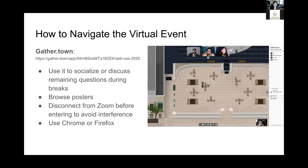The third platform — and this is supposed to be a fun one — is Gather Town. When you copy and paste the URL into your browser, you will enter a space that looks like a map of the CMU campus. You will be one of the avatars, connected via video and audio with people who are close to you, and you can start a conversation. If you walk away, you break away from the conversation, very similar to in-person. There are also a few posters throughout the space that you can browse. Please disconnect from Zoom before entering Gather Town to avoid interference, and note that Gather Town does not work with Safari but does work with Chrome or Firefox.